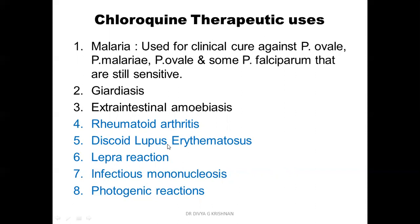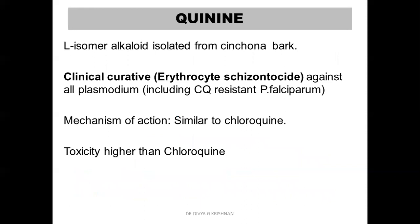Next we go to quinine. Quinine is a levo-isomer alkaloid isolated from the cinchona bark. It is also a clinical curative drug, just like chloroquine, and it is even active against falciparum resistant to chloroquine. The mechanism of action is very similar to chloroquine — the same inhibition of heme polymerase applies. One main problem with quinine is that it has higher toxicity than chloroquine.